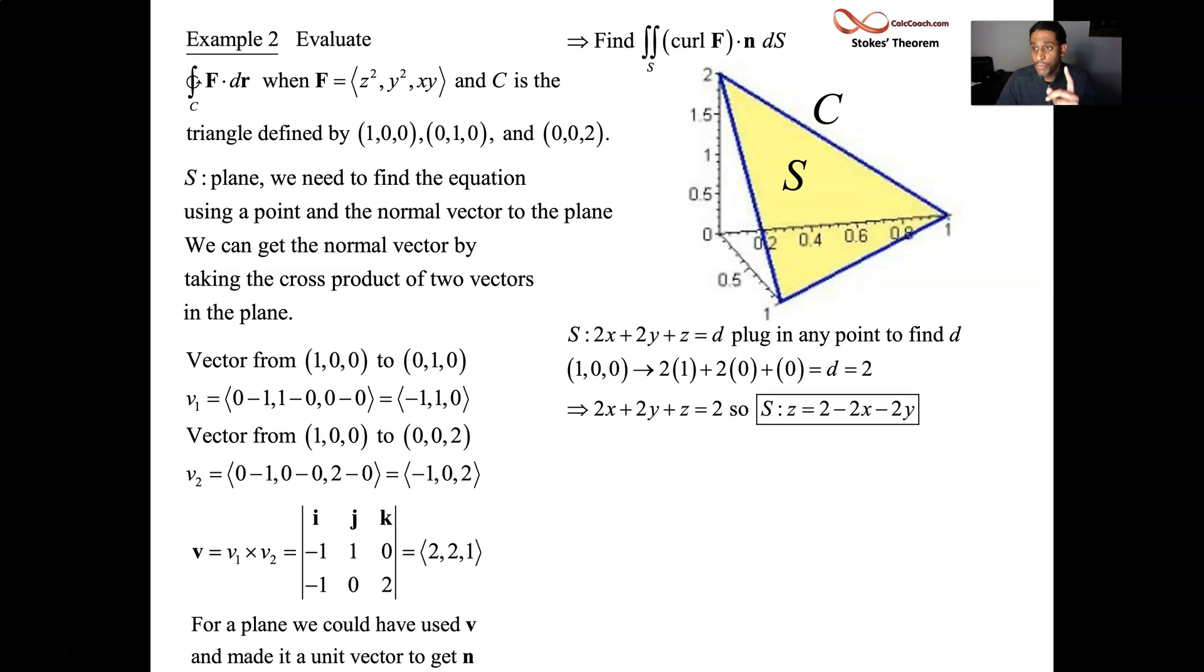And then we have to go calculate dS. We have to calculate the normal vector, make it a unit, dot it with the curl. And then we end up with a double integral. The actual execution of this flux integral ends up as a double integral over the shadow region in the xy plane. And that looks like a triangle there. So we'll get there. Let's first talk about dS.